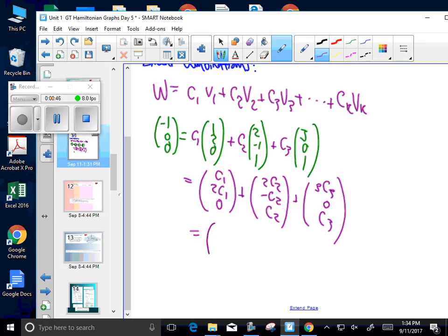And we could take out C1, C2, C3, and you'll get 1, 2, 3, 2, negative 1, 0, 0, 1, 1.